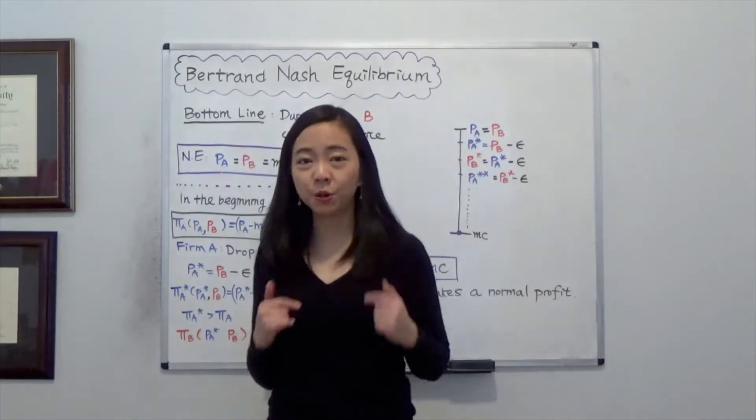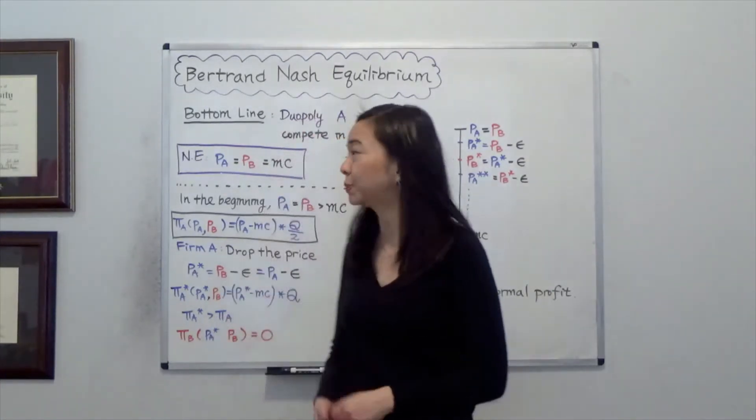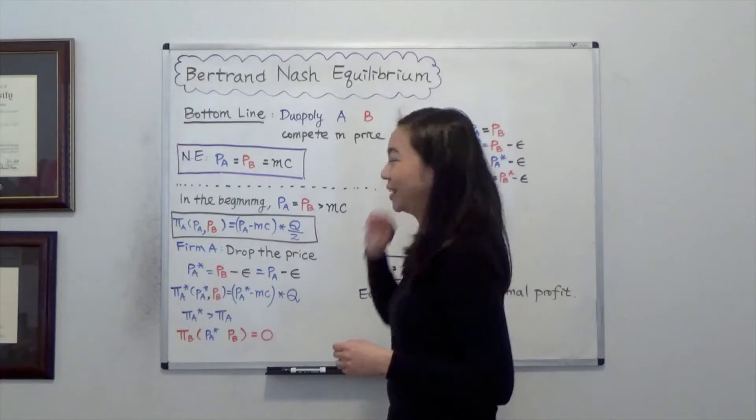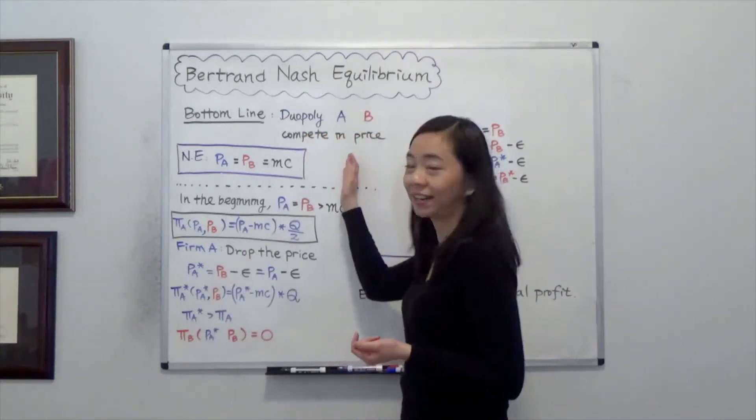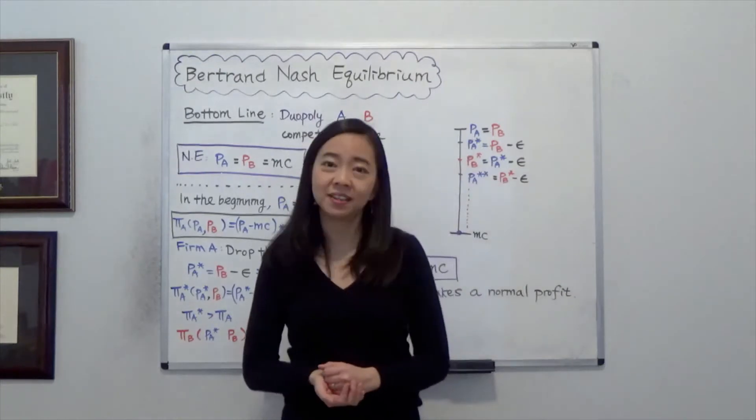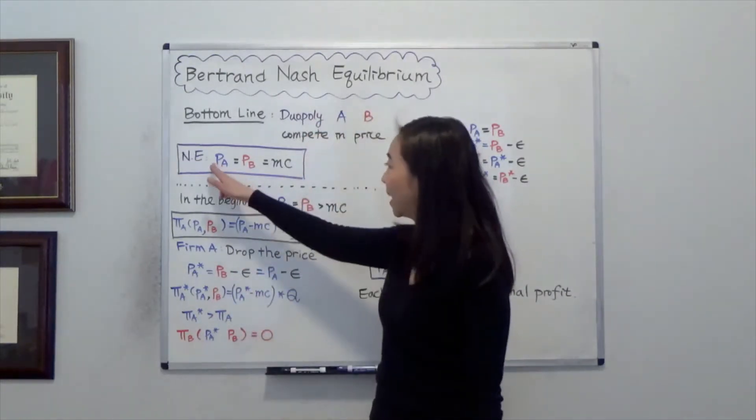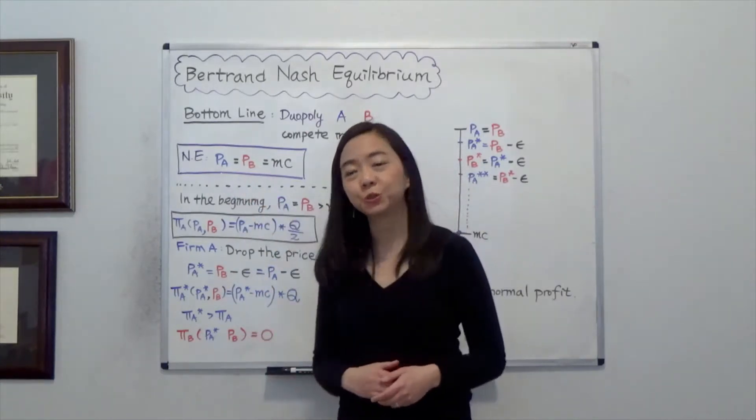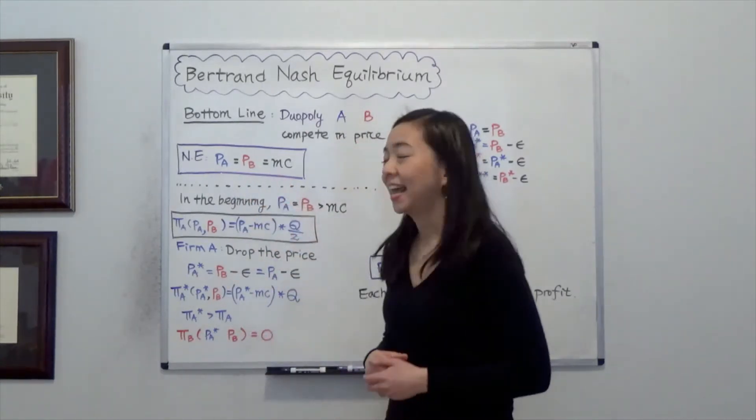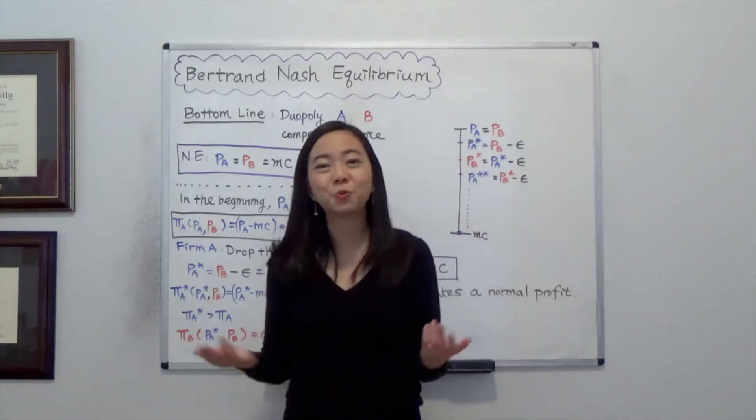So bottom line first, suppose we have two identical firms, firm A and firm B in a duopoly market and they compete in price. Then there's only one Nash equilibrium where the price of firm A equals the price of firm B, and that equals their marginal cost. And I'm going to prove to you why this is true.